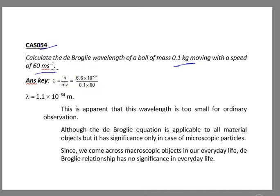The de Broglie wavelength formula is lambda equals h by mv, where h is Planck's constant, m is mass, and v is velocity.